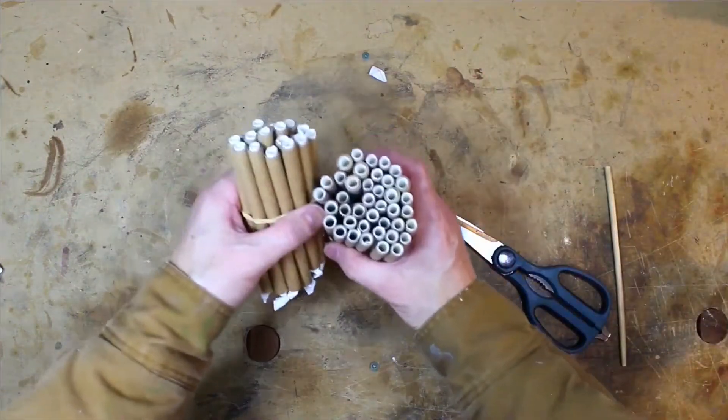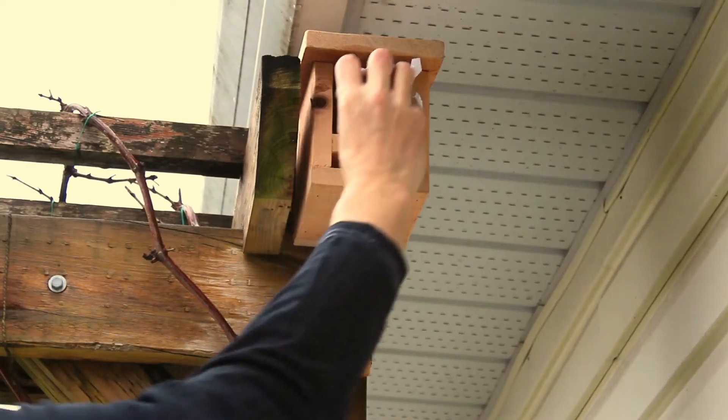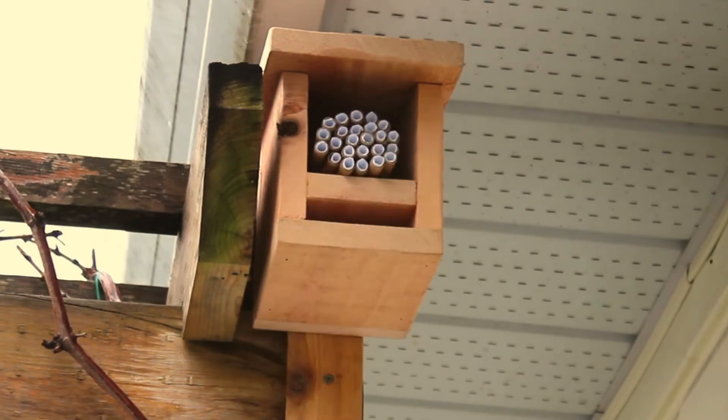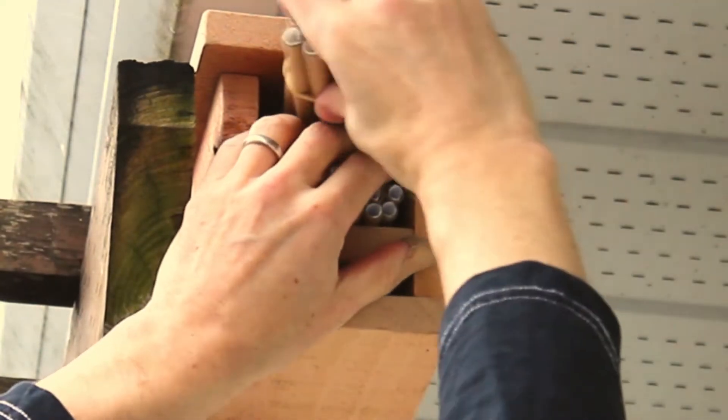The best time to set up your mason bee house is just before you put out your cocoons. This is usually around the beginning of spring in March or April, depending on your location.